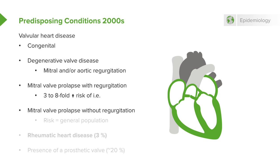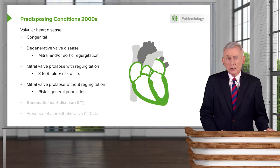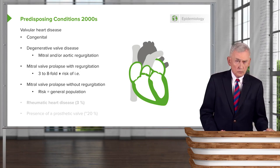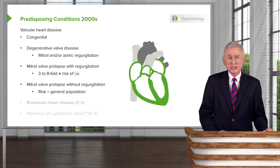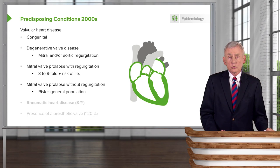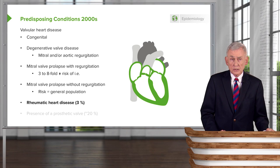Mitral valve prolapse without regurgitation carries about the same risk as the general population. Unless you examine the heart carefully, you may miss someone who has mitral valve prolapse with regurgitation. That condition may be preceded by a click and then a mid-systolic murmur that is more ejection in quality, whereas simple mitral valve prolapse is often heard as a mid-systolic click. Rheumatic heart disease still accounts for about 3% of predisposing conditions.